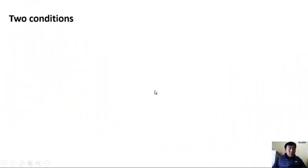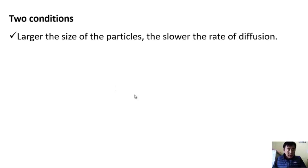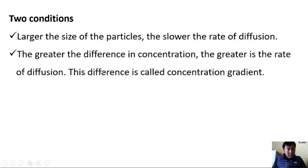Now for diffusion to happen, there are two conditions. Diffusion abides these two conditions. Firstly, larger the size of the particles, the slower the rate of diffusion. That means if the particle of the substance is larger, the rate of diffusion will be slow. And the second condition is the greater the difference in concentration, the greater is the rate of diffusion.